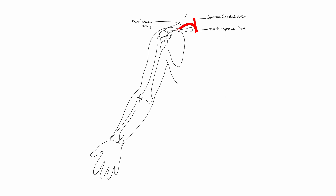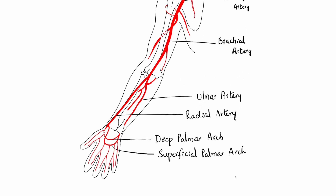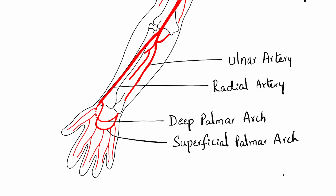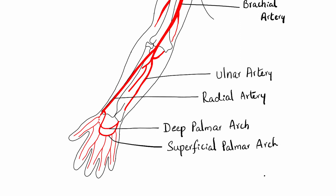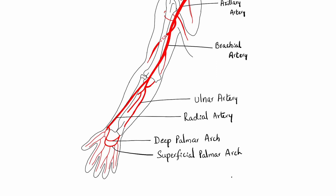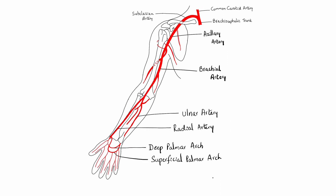The blood supply to the upper limb is by four main arteries: the axillary artery, the brachial artery, the radial artery, and the ulnar artery. The axillary artery is a continuation of the subclavian artery; at the lower border of teres major, its name changes to the brachial artery. The brachial artery continues down the arm and just distal to the elbow joint divides into the radial and ulnar arteries. In the hand, the radial artery terminates by forming the deep palmar arch and the ulnar artery forms the superficial palmar arch. The axillary artery supplies the shoulder region; the brachial artery supplies the arm; and the radial and ulnar arteries supply the lateral and medial parts of the forearm respectively.